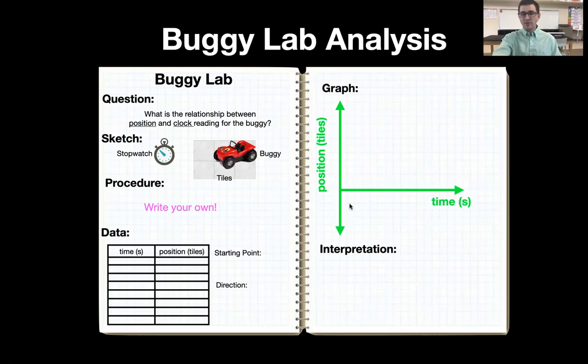So the other thing, the other common mistake that I see with people doing the analysis is not doing the analysis all the way. So in order to have a complete analysis, you need to make sure to graph your data, draw a line of best fit, if your data is linear, write the equation, and then offer a meaning for the vertical intercept and the slope of your line.